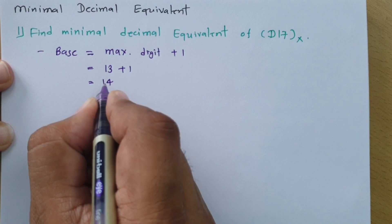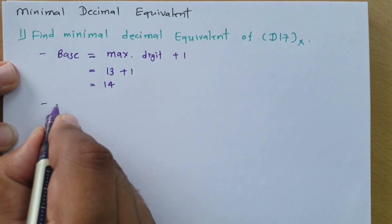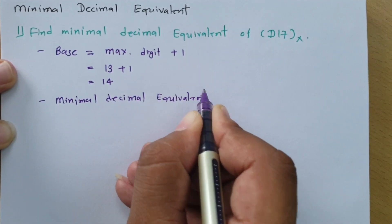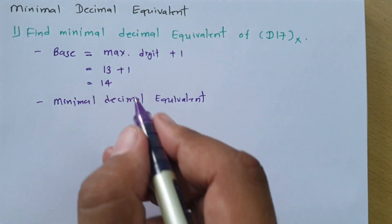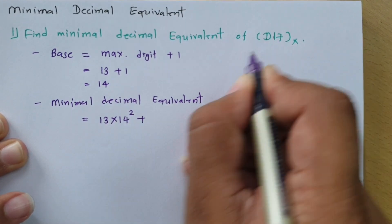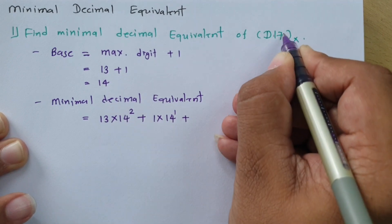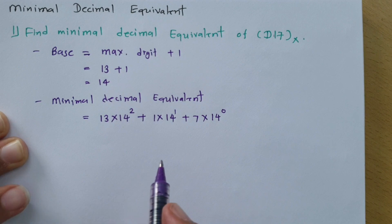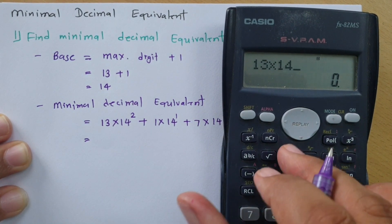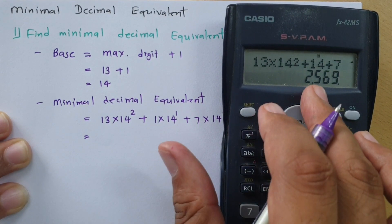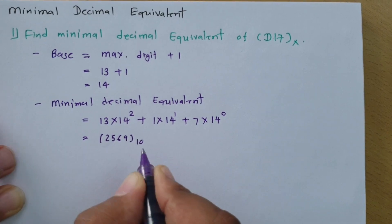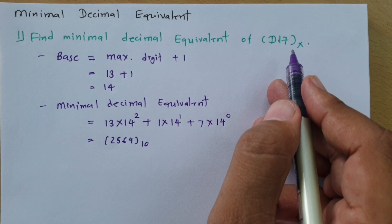Now we can compute the minimal decimal equivalent using base 14. That gives us: D (which is 13) into 14 to the power 2, plus 1 into 14 to the power 1, plus 7 into 14 to the power 0. Solving this: 13 into 14 squared, plus 14, plus 7, equals 2569. So the minimal decimal equivalent of this given number is 2569.